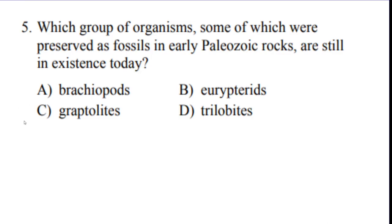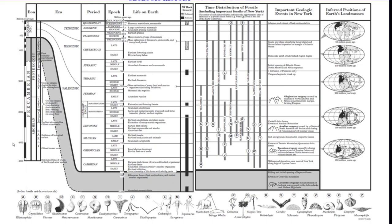Question five: which group of organisms preserved as fossils in early Paleozoic rocks is still in existence today? Checking all four choices, the only one not extinct is the brachiopod.